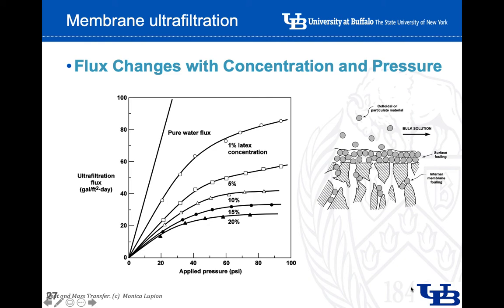In ultrafiltration, because of the way it operates, the flux can change a lot with the concentration and pressure. If you think about a membrane as a physical barrier, when we filter something with a higher concentration of impurities, after some time there is a layer comprised of impurity molecules or particles deposited over the surface of the membrane. This physical layer makes filtration more difficult because the delta P must be bigger to help the flow pass through both the membrane and this impurity layer that is being formed.